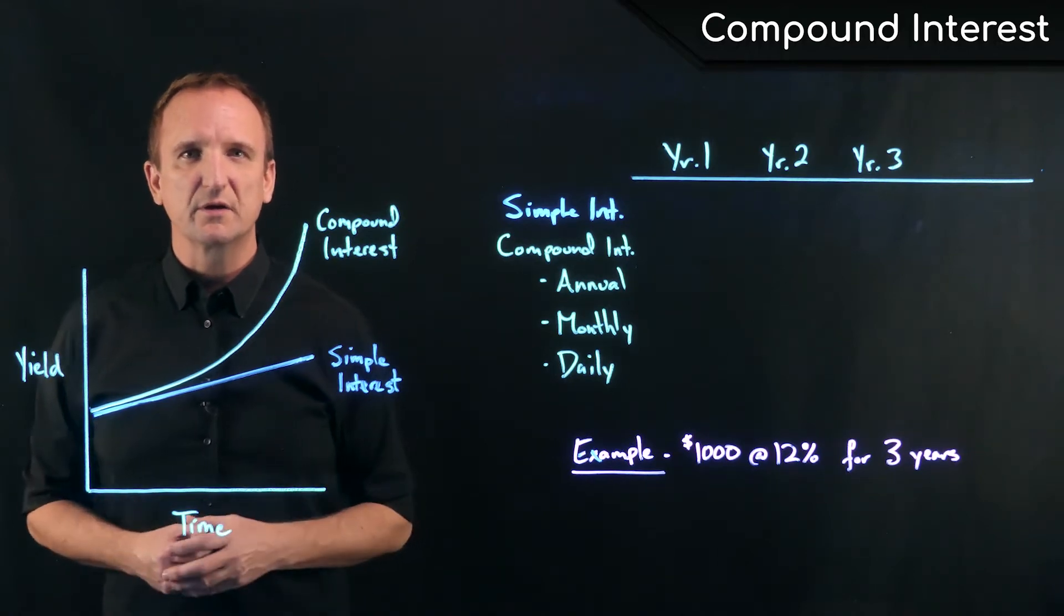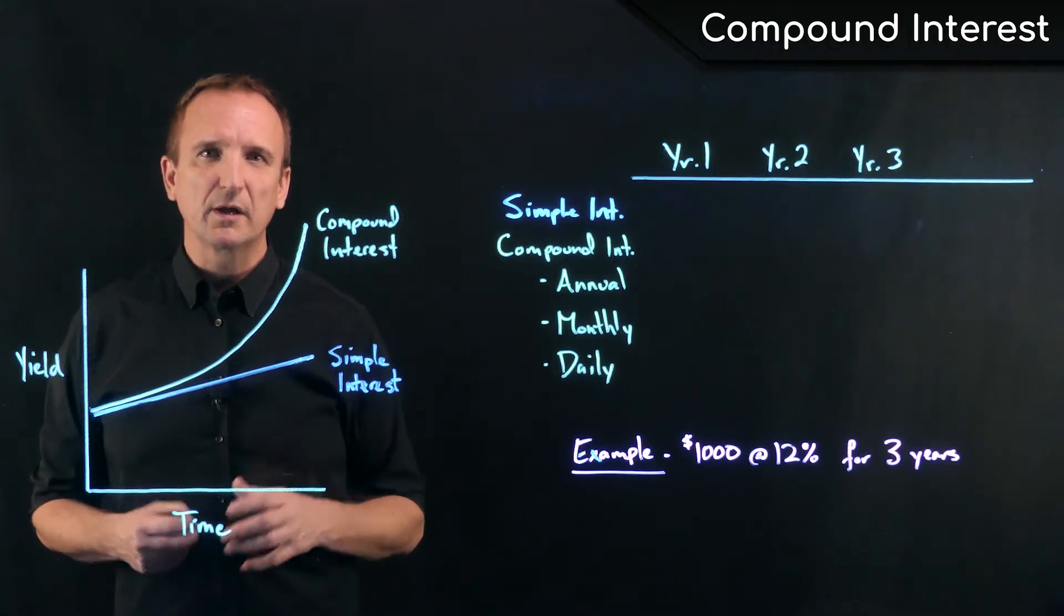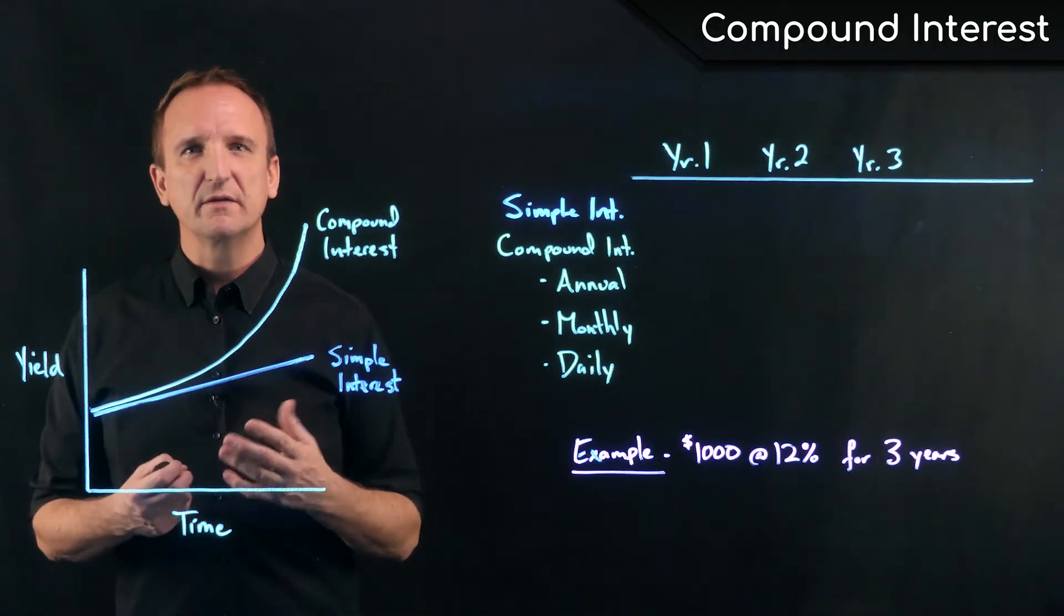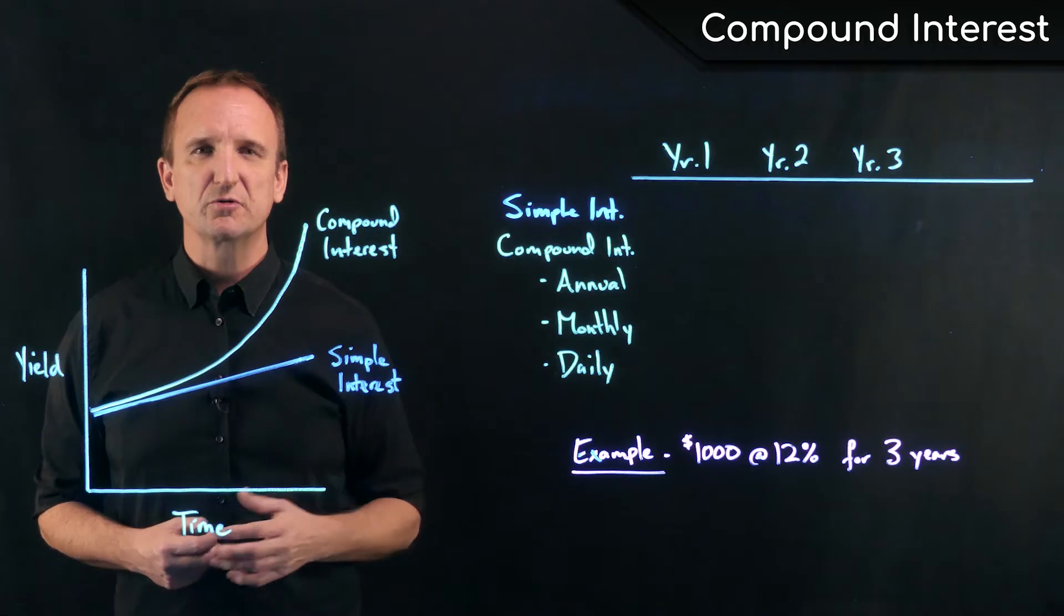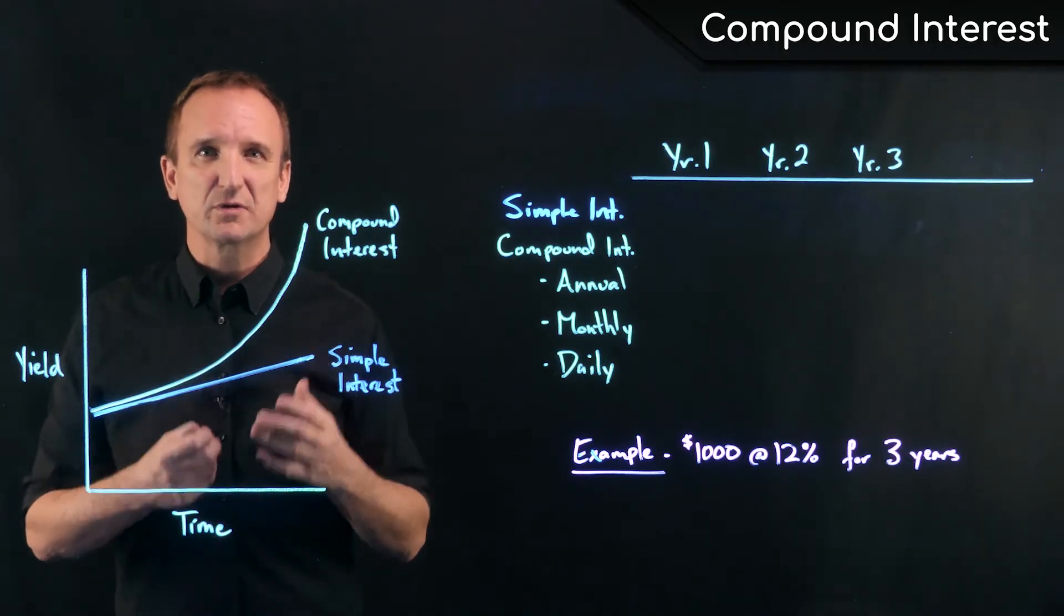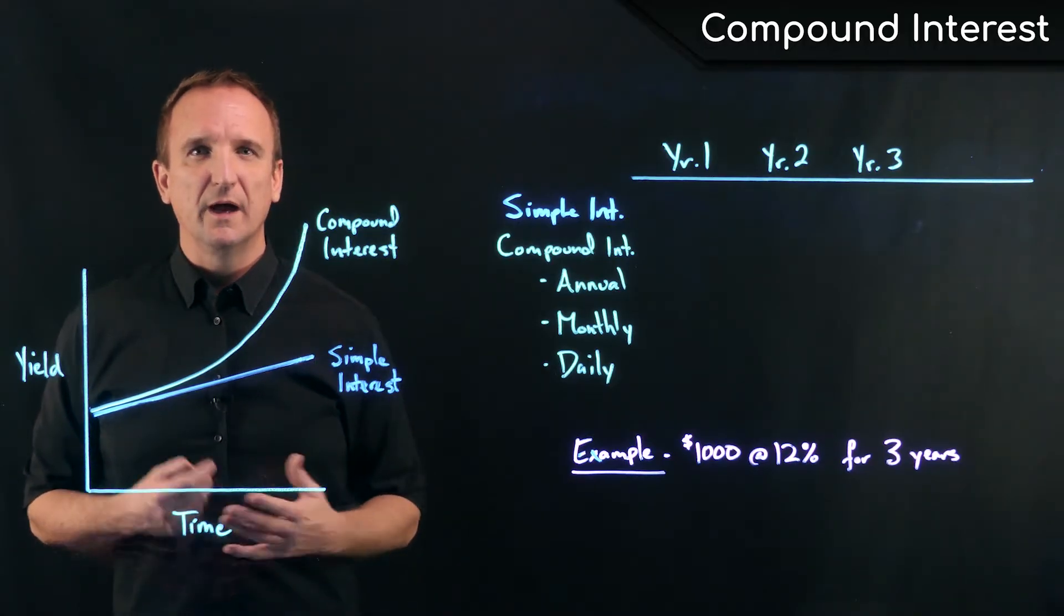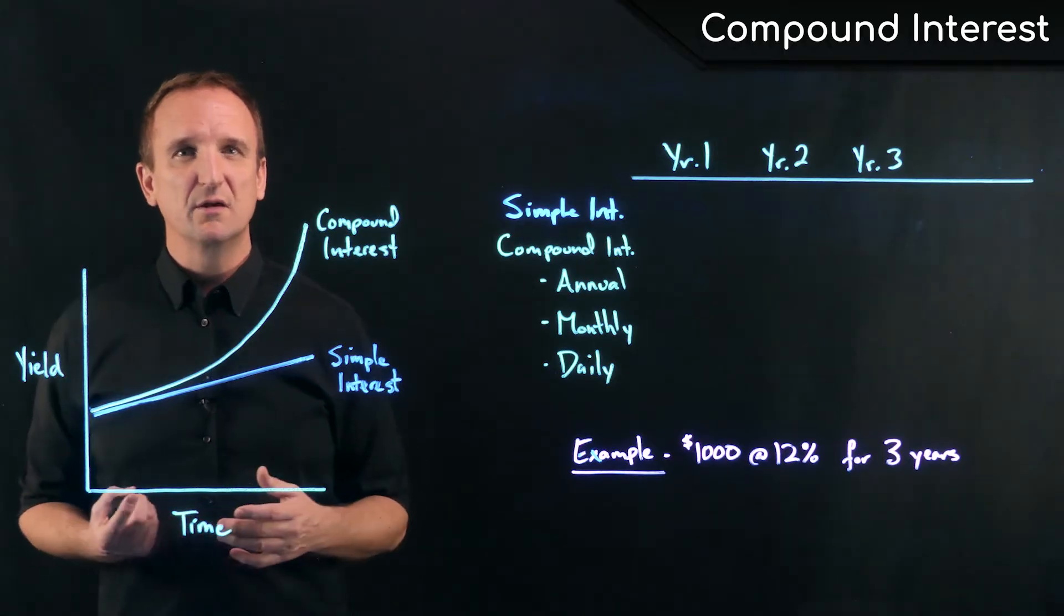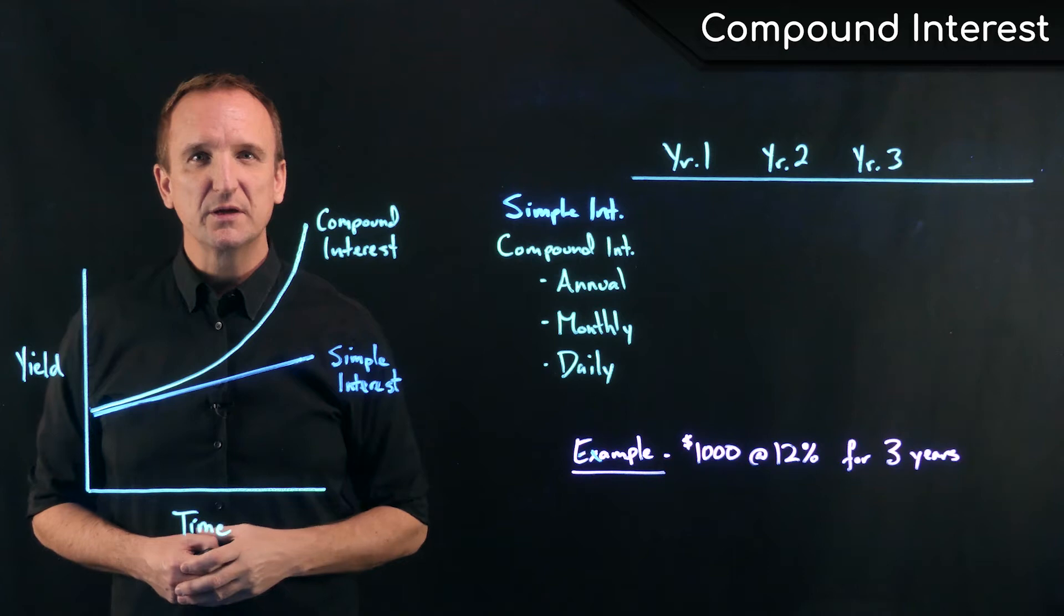Compound interest, on the other hand, is reinvested and added to or capitalized on the original principal amount, therefore increasing the value of the investment so that future interest earnings are earned both on the original principal and on interest. In other words, we earn interest on interest. Albert Einstein called compound interest the eighth wonder of the world because over time, compound interest creates exponentially higher returns.